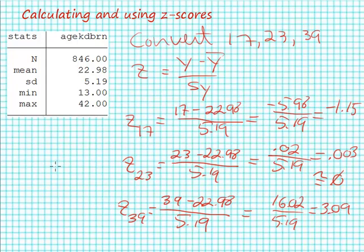Finally, a z-score for a woman who is 39 years old equals 39 minus 22.98 divided by our standard deviation of 5.19, which equals 3.09.